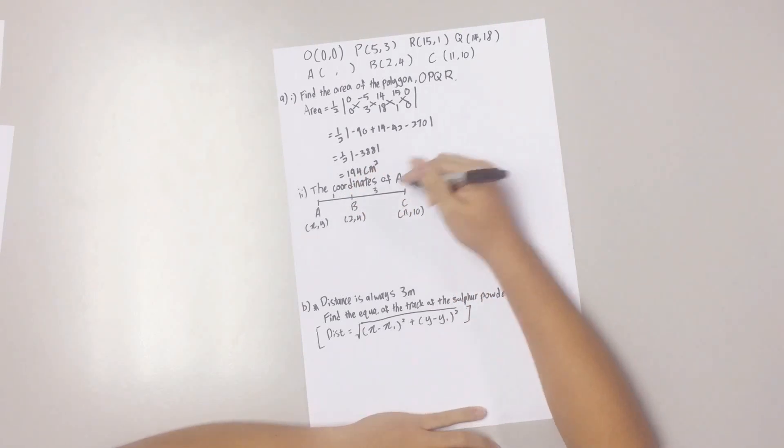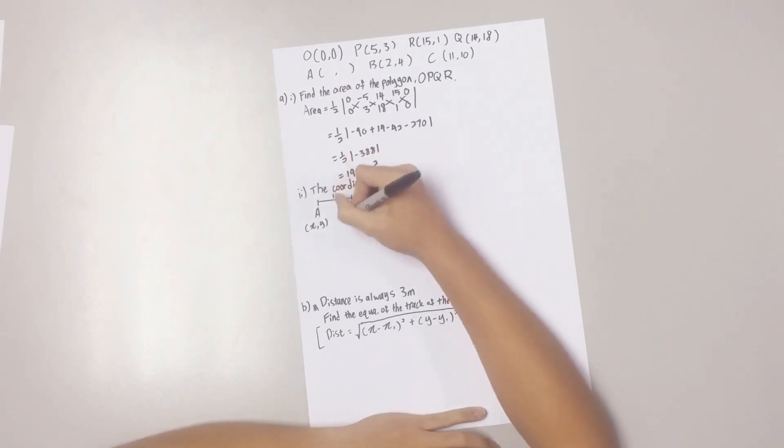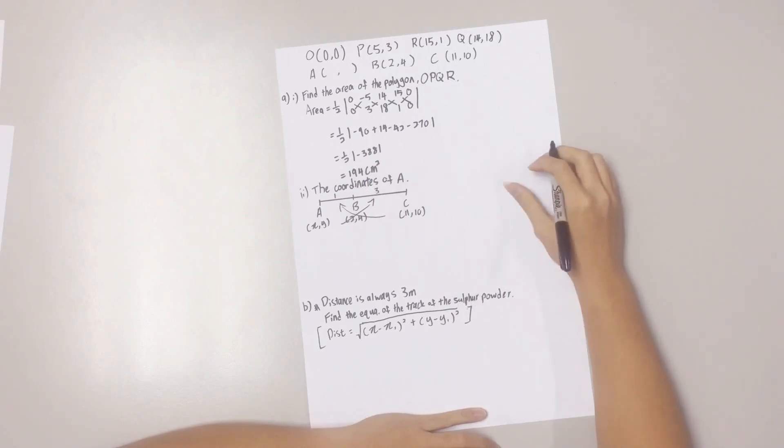So now, you cross-multiply the values to get your equation.